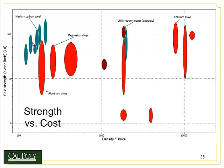Carbon fiber reinforced polymers are costly, which is why they're used primarily by competitive bicyclists. Now if I plot the strength of the material versus density times price, my best choice is medium carbon steel — it gives the lowest density at the cheapest price while still providing high strength. So if you're in the market for a cheap bicycle, you would definitely go with steel. But aluminum is a close second.